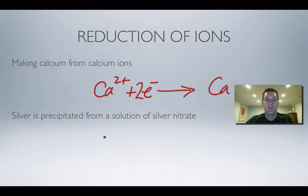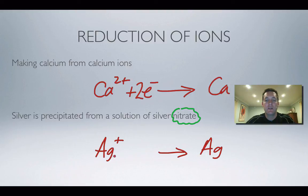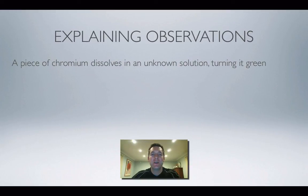Finally, silver is precipitated from a solution of silver nitrate. We need to recognise that the nitrate ion is not involved in this half equation. Silver nitrate contains silver ions, and we're forming silver metal. The atom count is correct, so we just add one electron to the more positive side — one electron because there's one positive charge. Electrons on the left because we're reducing.